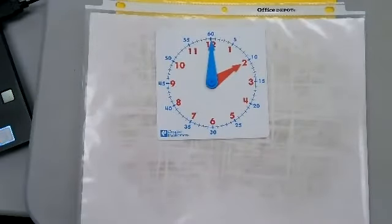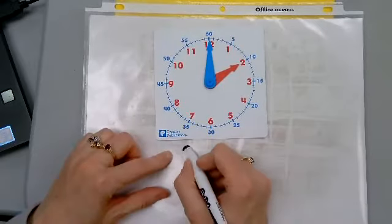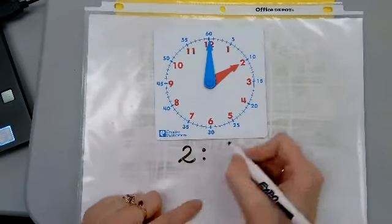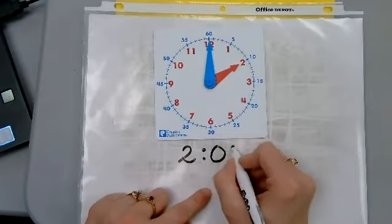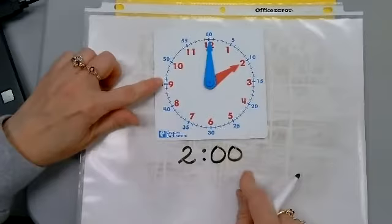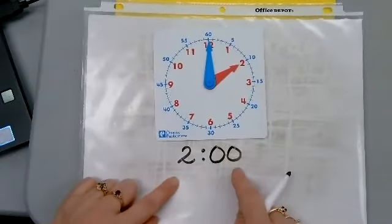What time does the clock show? Remember to answer me in a complete sentence. The clock shows two o'clock. We would write a two, a colon, and two zeros to write it as a digital time. This is an analog clock. This is a digital clock.